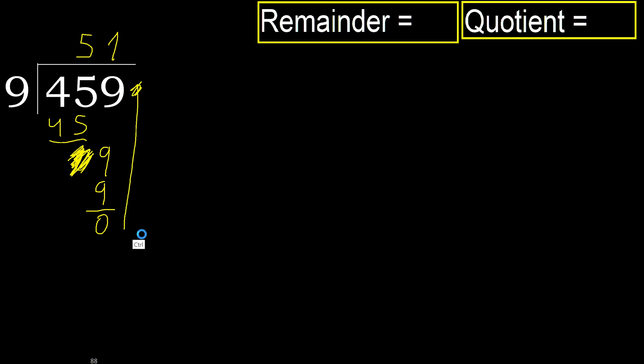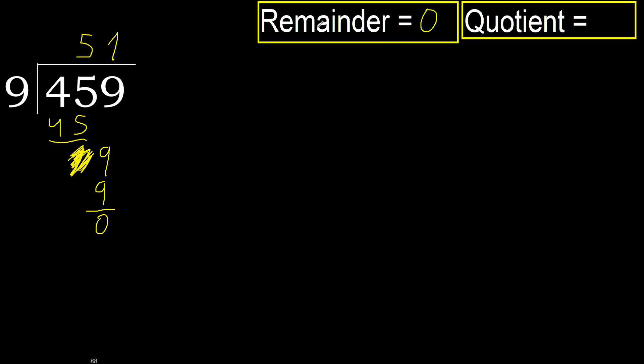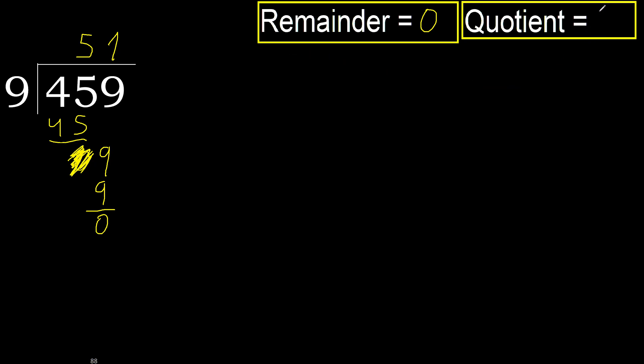That is not a number, therefore finish it. Ok, 459 divided by 9 is 51.